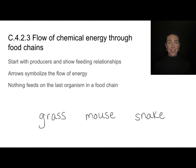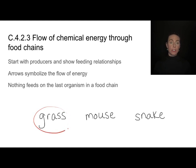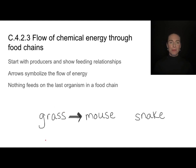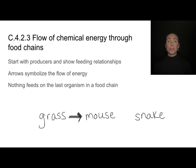Theme C is all about interaction and interdependence, and nothing shows that better than food chains. Food chains always start with primary producers and show a sequence of feeding relationships. They always begin with the primary producer and always include arrows — these arrows show the direction of energy flow. This arrow shows that the energy within the grass is being transferred to the mouse, and that energy is transferred because the mouse eats the grass.